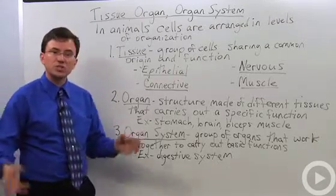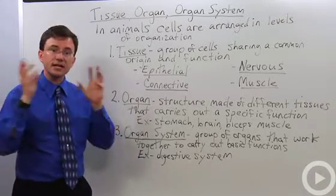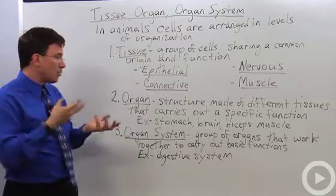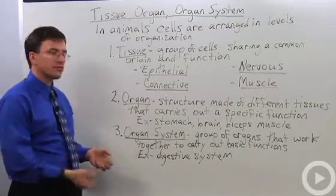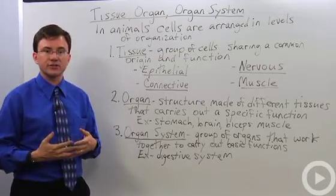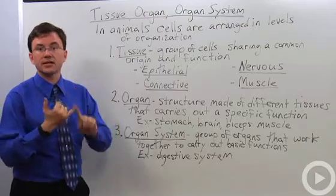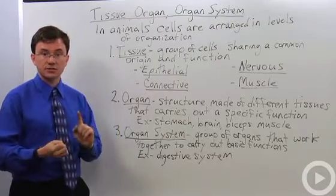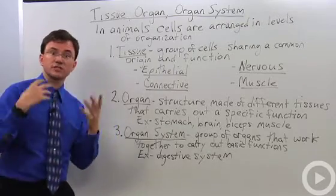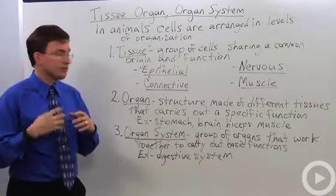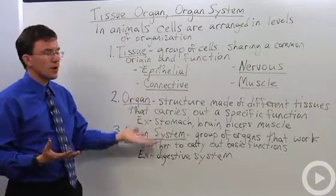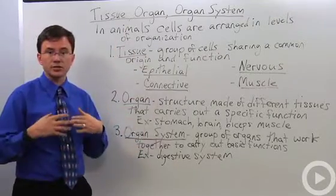Organ systems is when you take several organs that all work together and they carry out one of the basic functions of the body. And we will talk about things like the digestive system, reproductive system, and nervous system. This is the basic way that your body is organized.